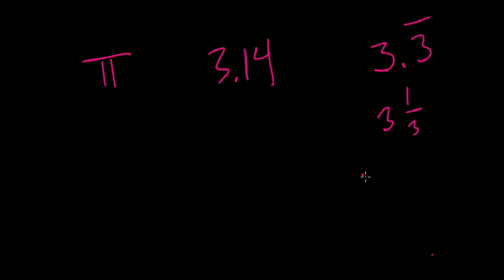Okay, here we want to look at what is true about these numbers. We have the number pi, 3.14, which is not pi of course, but a decimal approximation, most likely of pi, and then 3.3 repeating, which is really 3 and 1 third, because you might know that 0.3 repeating is really just equal to 1 third.